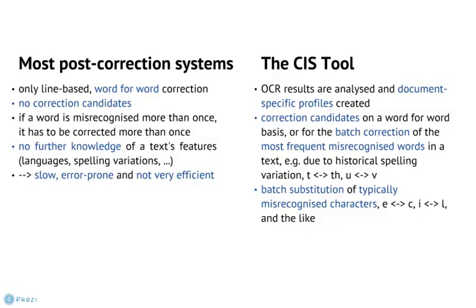But what do the profiles actually do? Well, the language profiles contain information on the vocabulary of the source document — that is, on the number of languages it consists of, how modern or historical the vocabulary is, and which spelling variations are common in the text. Some German examples would be a historical V for a modern U, or TH for T, which is of course a problem for an OCR engine basing its results on a modern dictionary, and can lead to a lot of recognition errors.